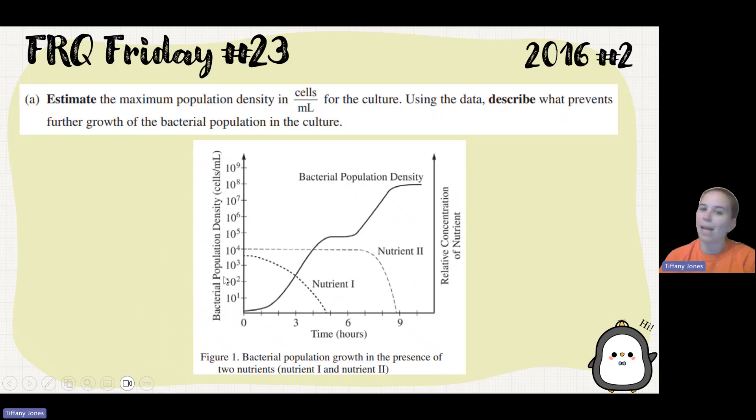Part A says to estimate the maximum population density in cells per milliliter for the culture. So if we look here, we can see where's the maximum at? Well, right here. And so if we draw a line over, we can see that at 10 to the 8 cells per milliliter is where we have the maximum. So 10 to the 8 is our answer, and I of course would write that as a complete sentence.